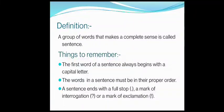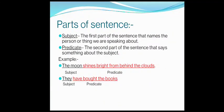These are the three conditions which make a group of words a sentence. Now let us talk about the parts of a sentence. There are two parts of a sentence: the first is subject and the second is predicate.